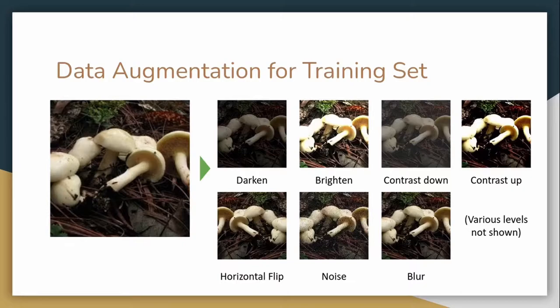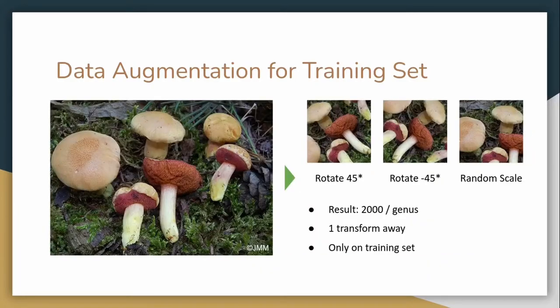Hence, we employed data augmentation techniques to balance the classes. We took the processed images and adjusted brightness and contrast, flipped them horizontally, and added noise and blur. We also did rotations in random scaling, but on the unprocessed originals instead, as these required further cropping.